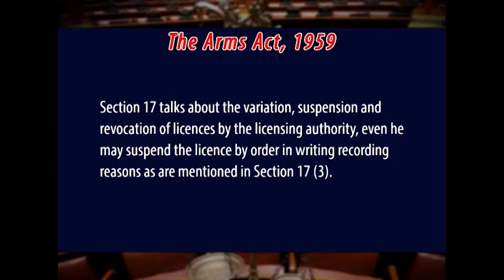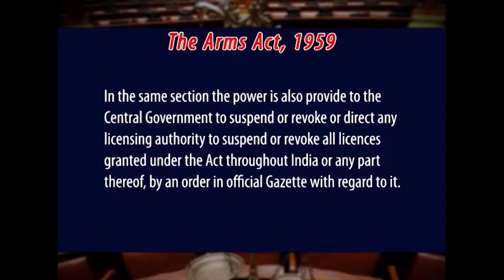Section 17 talks about the variation, suspension, and revocation of licenses by the licensing authority. He may suspend the license by order in writing recording the reasons as mentioned in Section 17. The power is also provided to the central government to suspend or revoke, or direct any licensing authority to suspend or revoke, all licenses granted under the Act throughout India or any part thereof by an order in the official Gazette. This is about this module.